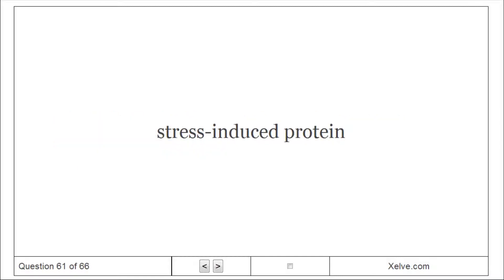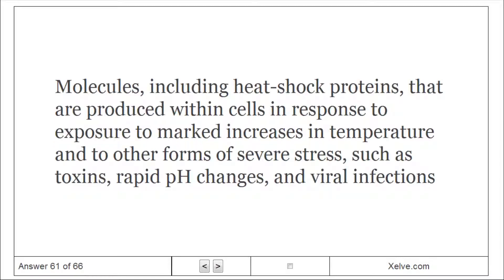Stress-induced protein: Molecules, including heat shock proteins, that are produced within cells in response to exposure to marked increases in temperature and to other forms of severe stress, such as toxins, rapid pH changes, and viral infections.